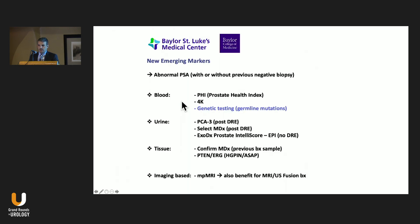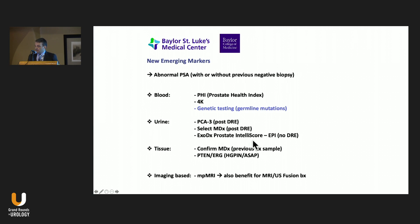In the blood, what do we have available commercially and most popularly? We have the PHI — Prostate Health Index. We have 4K testing, and genetic testing for germline mutations. In the urine, we have the PCA3, which is done after prostatic massage. We have SelectMDX, which also requires prostatic massage. The EPI — the ExoDx — IntelliScore, this one is just for a simple urine sample. In the tissue, we can use the ConfirmMDX, which is performed on the previous biopsy sample, and also the PTEN and ERG tests, which can also be done on pathology from the biopsy sample.